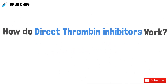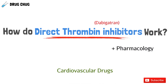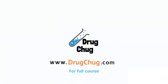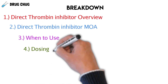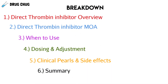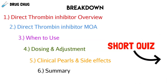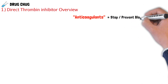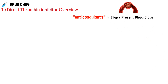Welcome to another Drug Chug episode. Today we're going to talk about direct thrombin inhibitors like dabigatran and how they work. We'll talk about everything you need to know about these direct thrombin inhibitors. To first understand this class of drugs, we need a quick overview. Direct thrombin inhibitors are anticoagulants, which means they stop and prevent blood clots from forming in the body.